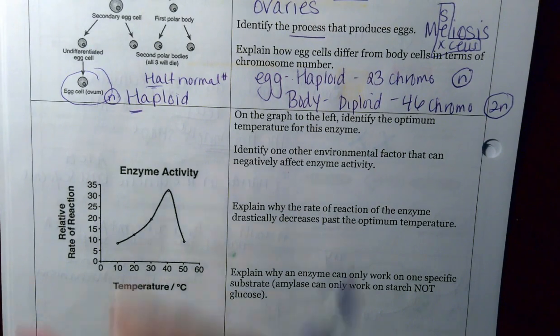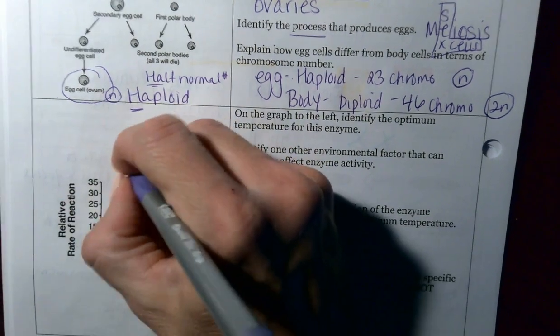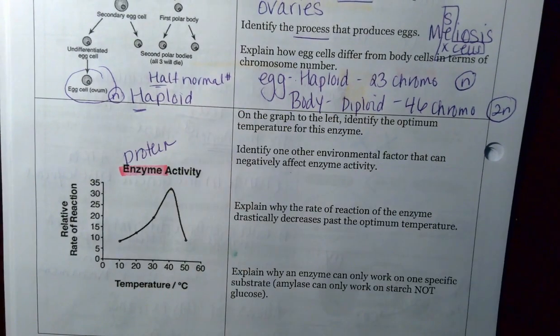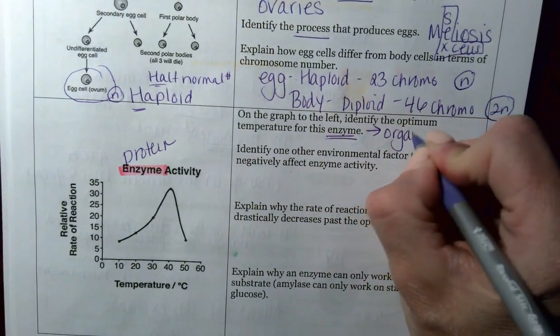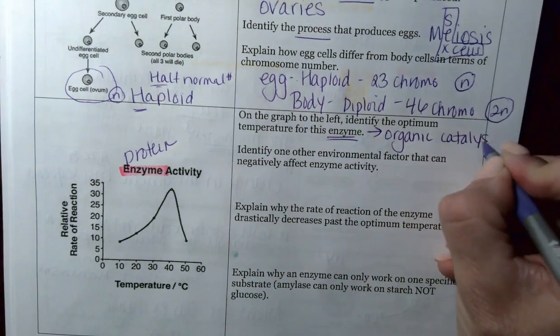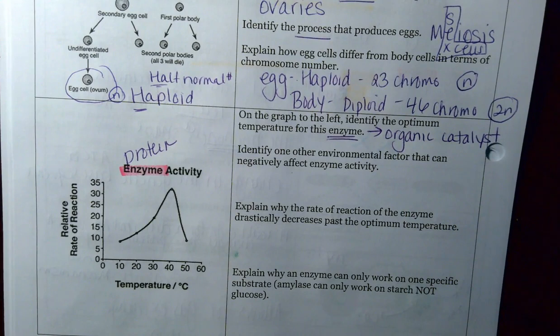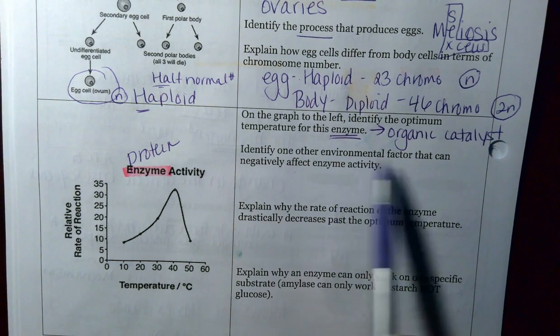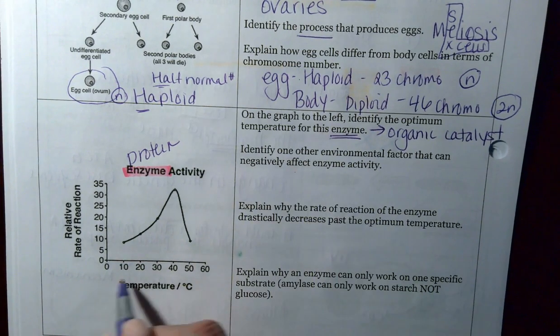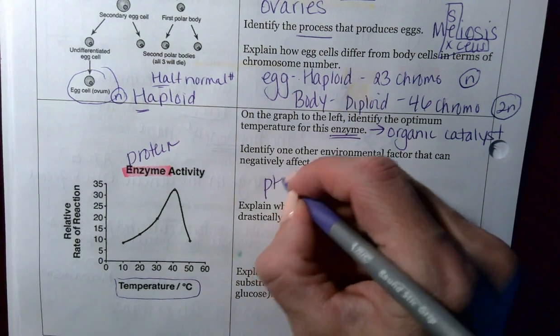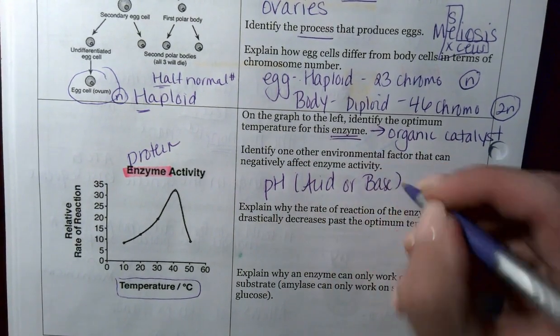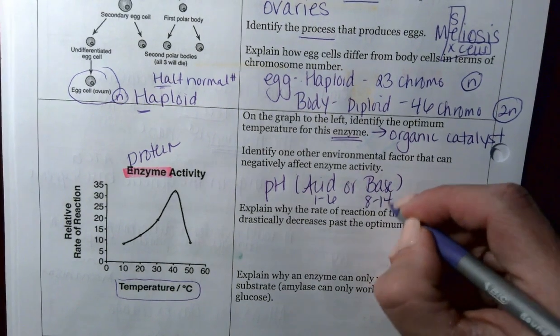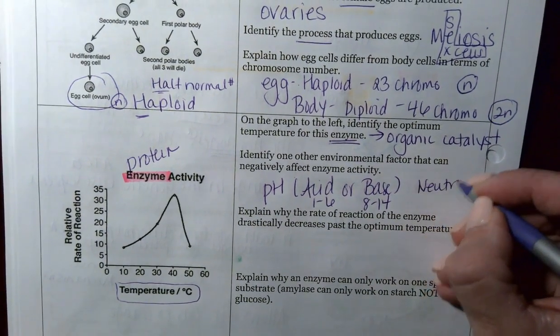Over here we have an enzyme question. Enzymes are just another example of a protein. Also remember, another name for an enzyme is going to be a catalyst or organic catalyst. The word organic just refers to the fact that it has both carbon and hydrogen in it. When you take chemistry, you'll see there are other types of catalysts. Not all of them are going to be organic. Identify one other environmental factor that can negatively affect enzyme activity. Here I have temperature. The other one is going to be pH. If you don't remember, pH refers to if something is an acid or a base. Acid values are 1 to 6. Base is going to be 8 to 14. And then you have neutral, which is right around 7.